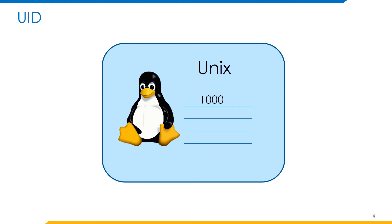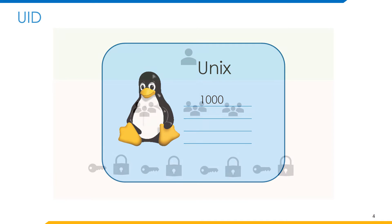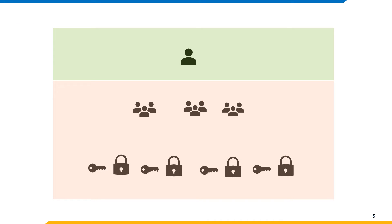Unix provides us two ways in which we could classify who could access a resource. UID is a unique identifier assigned to a Unix user. No two Unix users shall have the same UID. This is the primary way in which we could identify a particular user in Unix, and it helps us in identifying various users in Unix.